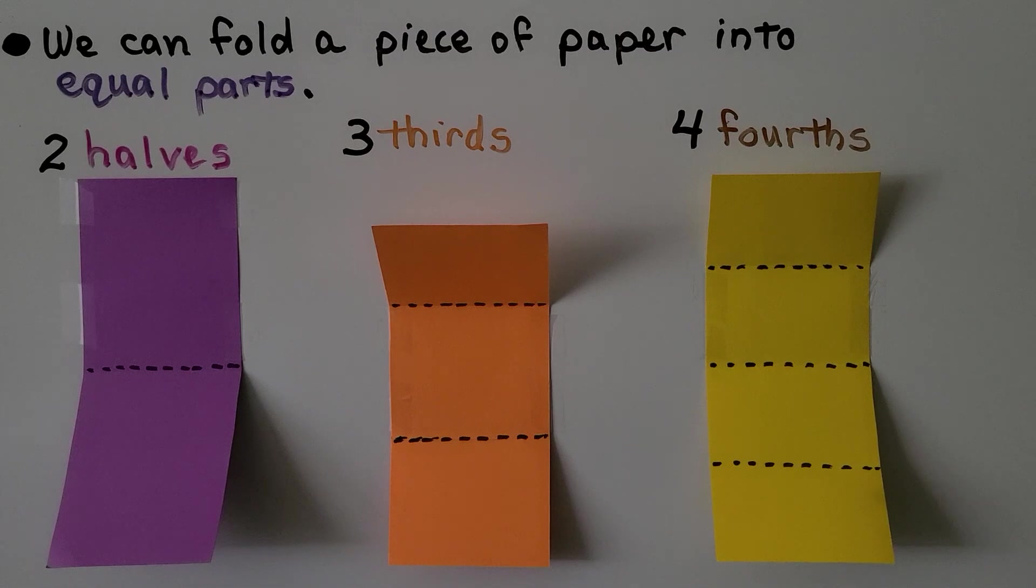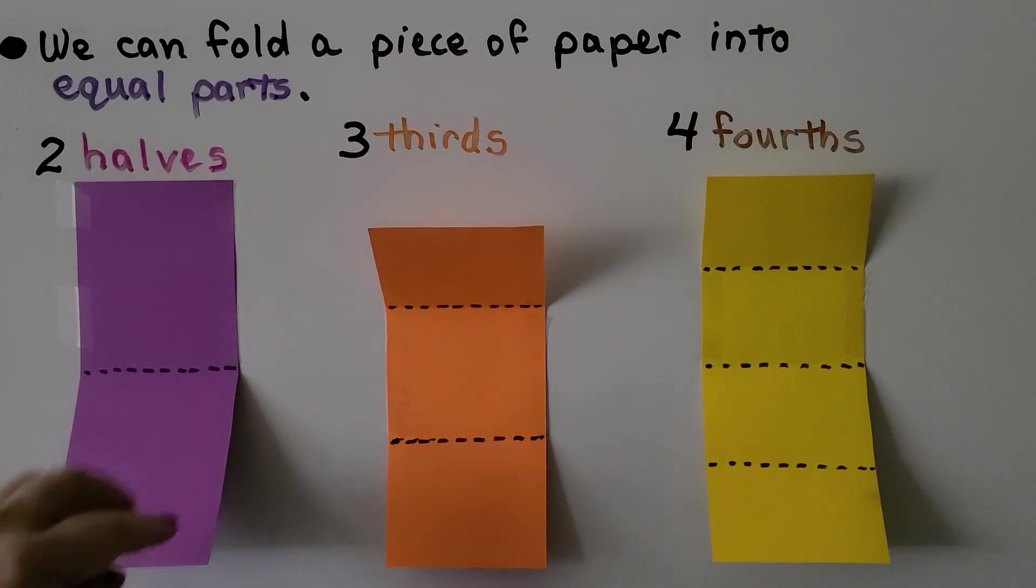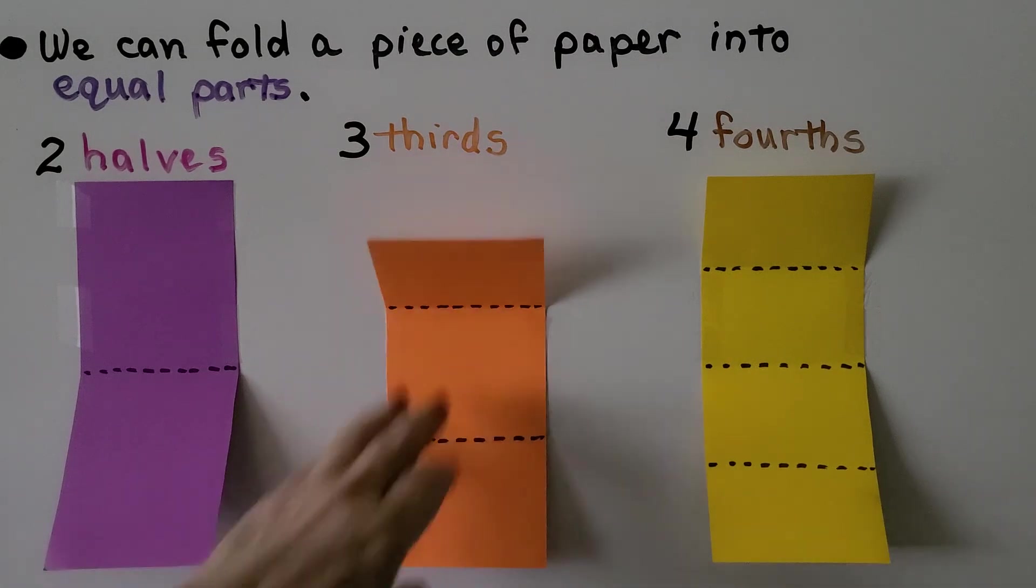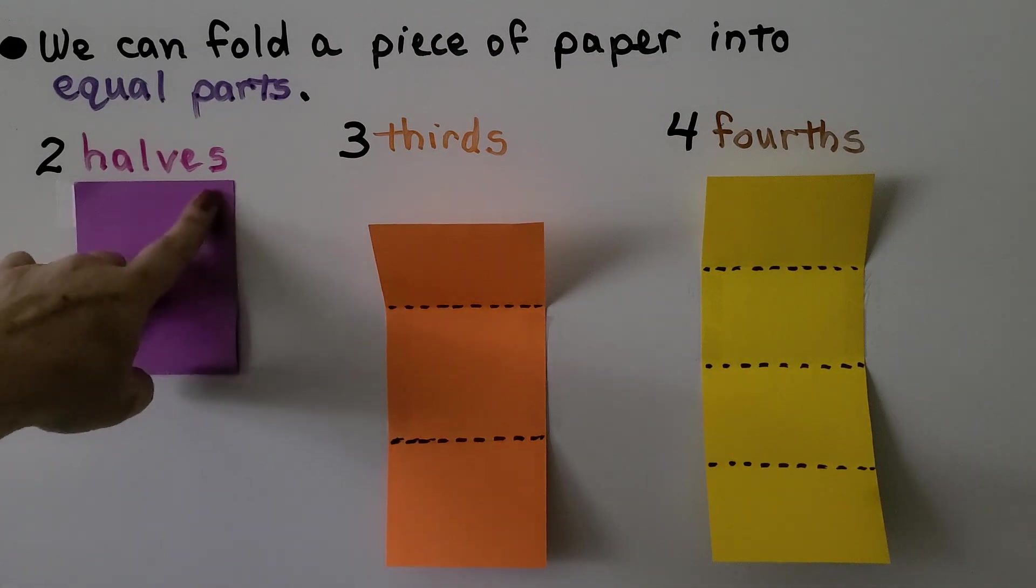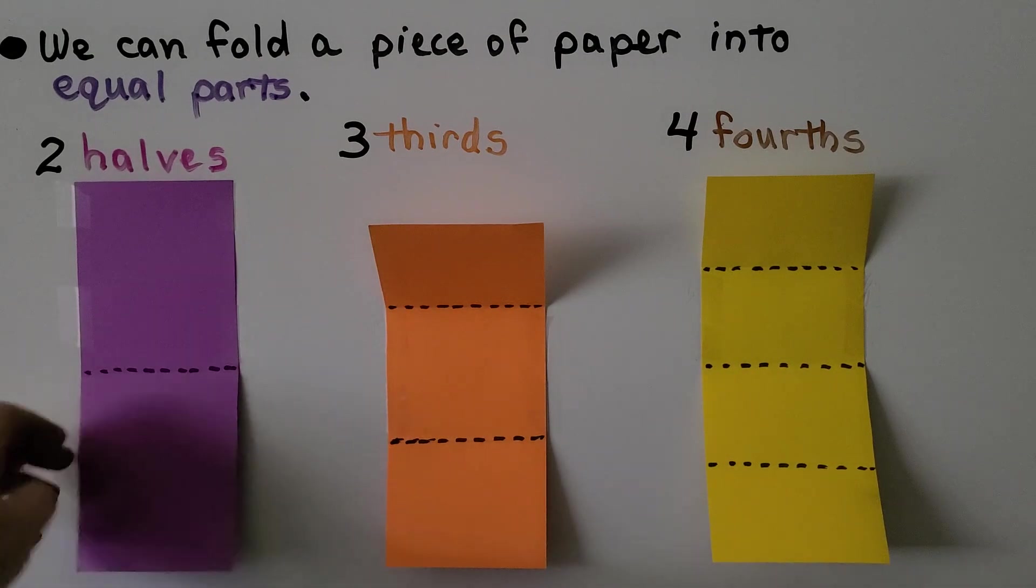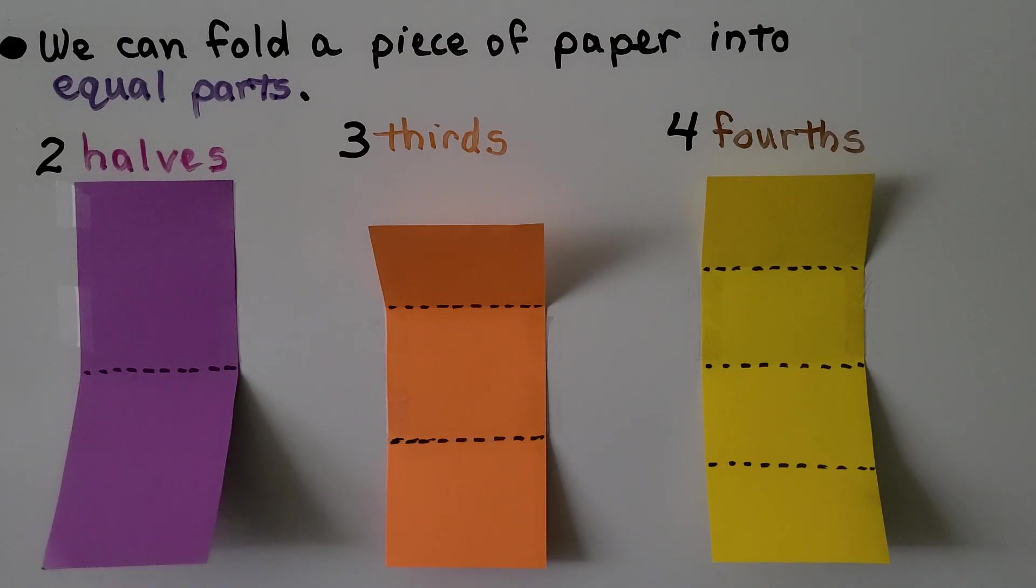We can fold a piece of paper into equal parts. We can get three pieces of paper that are the same size. We can fold one of them in half. See how it matches up? This side covers this side. We folded it in half. There's two halves.